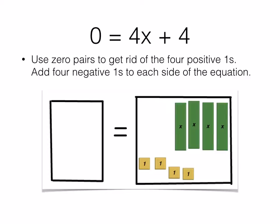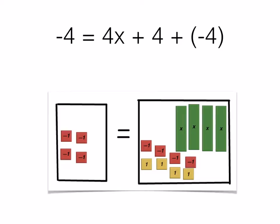Now what we want to do is use zero pairs to get rid of those positive 4 counters on the right-hand side. So we're going to put 4 negative counters on both sides of the equal sign. Notice the way the equation has been changed symbolically.